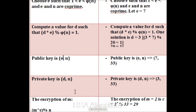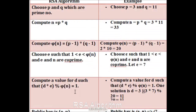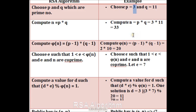Now let's see the example. Suppose I have chosen prime numbers 3 and 11. Then compute the value of N: P into Q is equal to 3 into 11, which is equal to 33. Then compute the value of φN. By putting the values in the formula, I get 20.